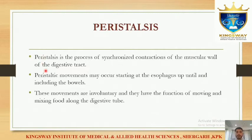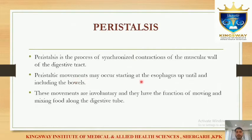The movement that occurs in the digestive system is called peristalsis. Peristalsis is a process of synchronized contraction of the muscular wall of the digestive tract. Synchronized means contractions occur in a sequence, propelling food forward. Peristalsis movements may start from the esophagus until the bowels — from the esophagus to the rectum. These movements are involuntary, and their functions are moving and mixing of food.